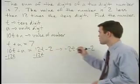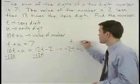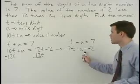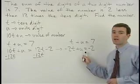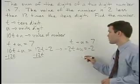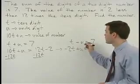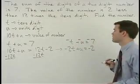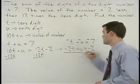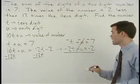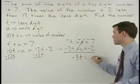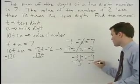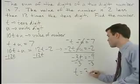Rewriting our first equation above it, t plus u equals seven. We can now solve our system by addition. So if we multiply the top equation by negative one, we have negative t plus negative u equals negative seven. And when we add the equations together, the u's cancel and we have negative 3t equals negative nine. Divide both sides by negative three and t equals three.